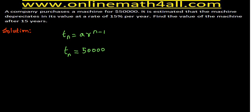Our next question is: what is the value of R? In geometric sequence, R stands for common ratio. But when we do this kind of depreciation problem, there is a method to get the value of R. There is a common method for all kinds of problems on depreciation, not only for this particular problem. To get the value of R in depreciation problems, we just have to get the decimal form of the given rate. The decimal form of 15% is 15 over 100, which equals 0.15.